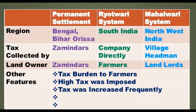In the permanent settlement, the landowner was the zamindar. In the Ryotwari system, the landowners were the ryots — the farmers. In the Mahalwari system, it was a mix of both permanent and Ryotwari systems, where the whole village was assigned the task of paying taxes, but the tax burden ultimately fell on the farmers. Taxes were very high and kept increasing frequently in Ryotwari and Mahalwari, but in permanent settlement the tax was fixed.